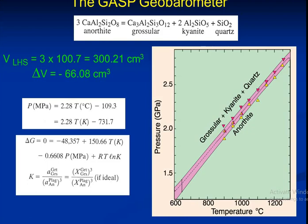The GASP geobarometer means anorthite is converted to grossularite, kyanite, and quartz. This conversion of anorthite is shown in the temperature-pressure state path diagram.